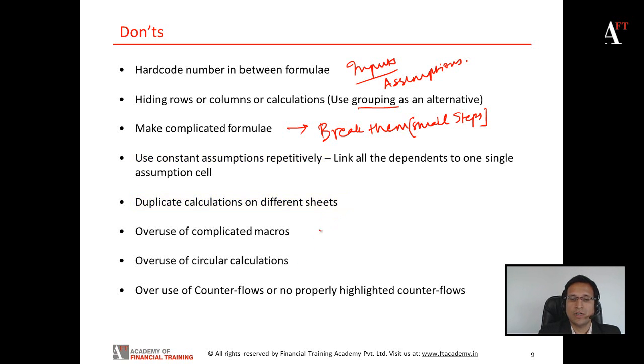You should not use a lot of circularity and a lot of macros. They can break the model down sometimes. They can also make the model slow. Plus, it is difficult for all the users to understand the macros and coding that you have done in the model. So they are better, lesser used or avoided.